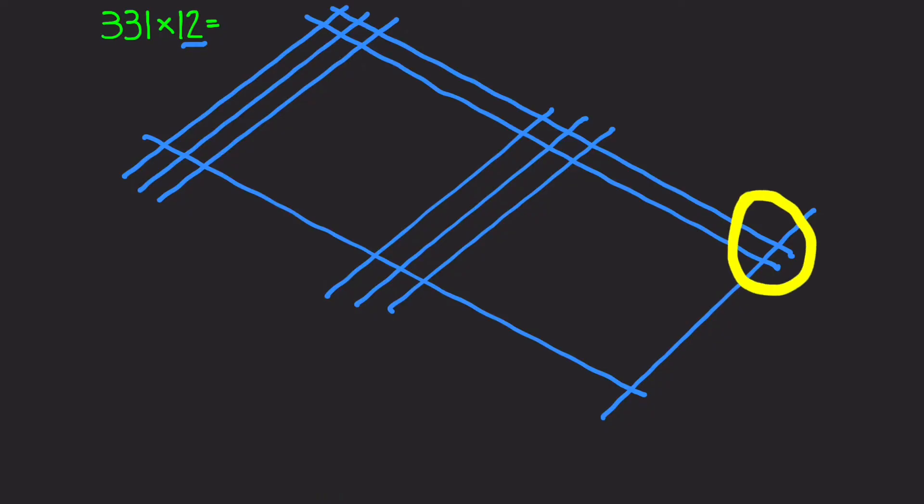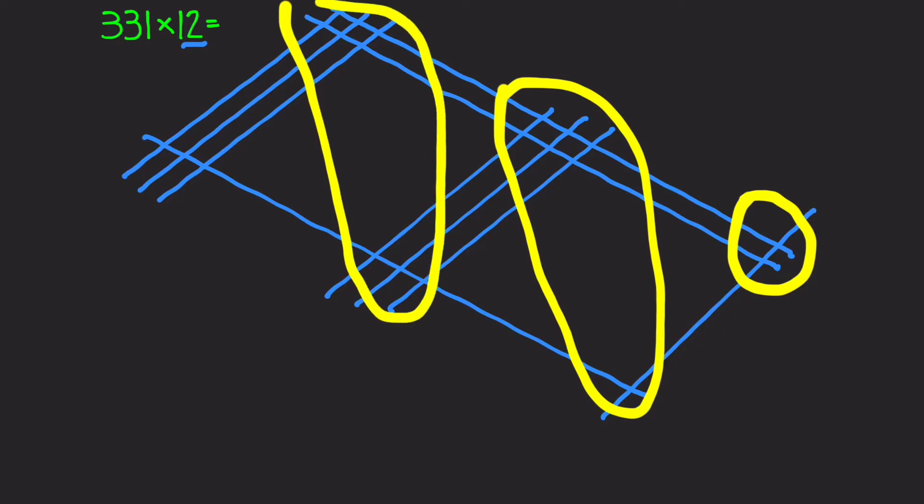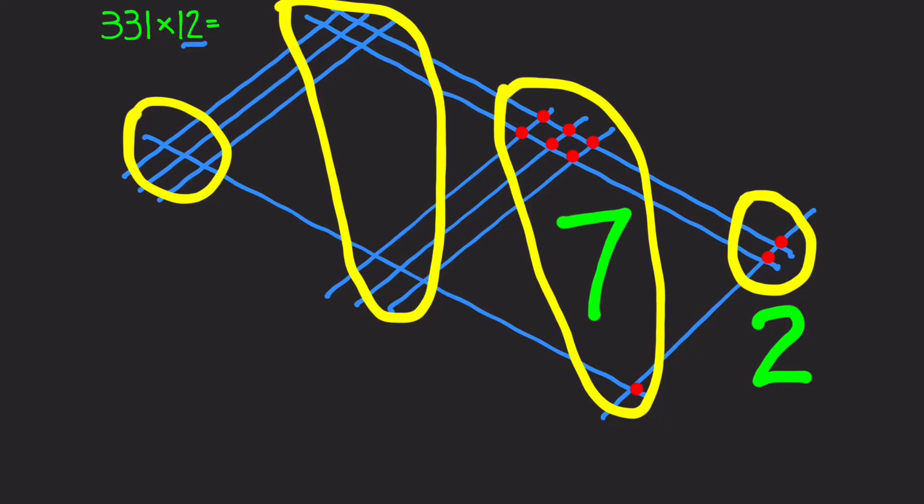Now because we're working with larger numbers we actually have 4 zones that we need to count where the lines cross. So always start counting on the right hand side. We have 2 in the first section. And then 1, 2, 3, 4, 5, 6, 7, 8, 9 in the third section. And in the last section 1, 2, 3.